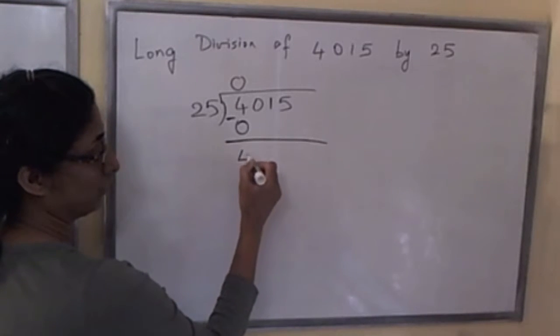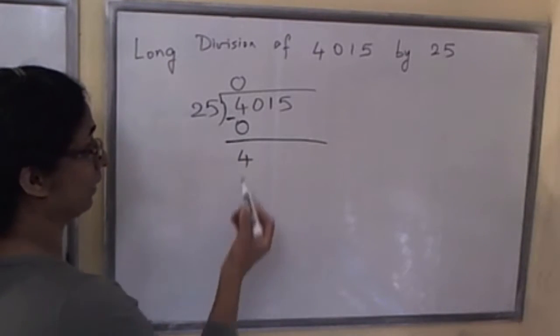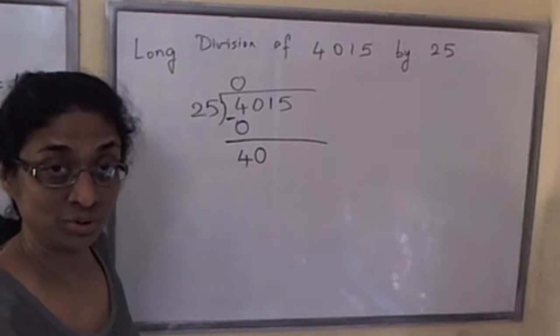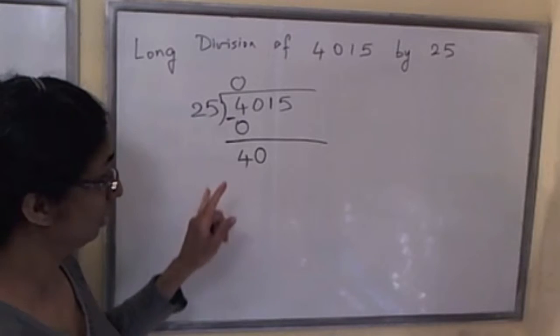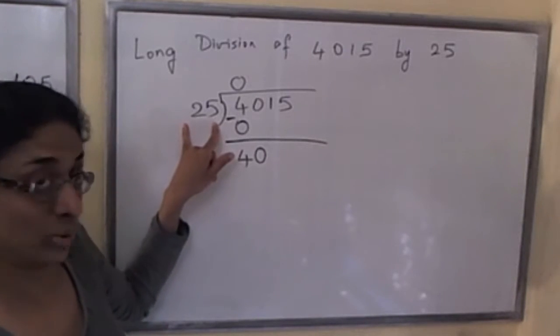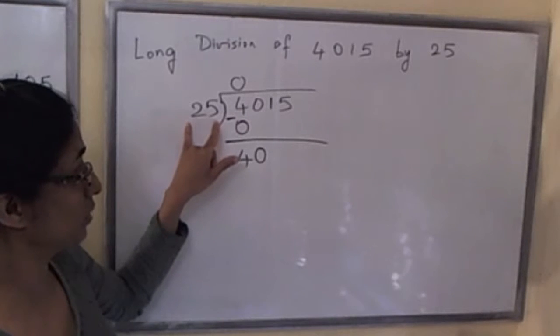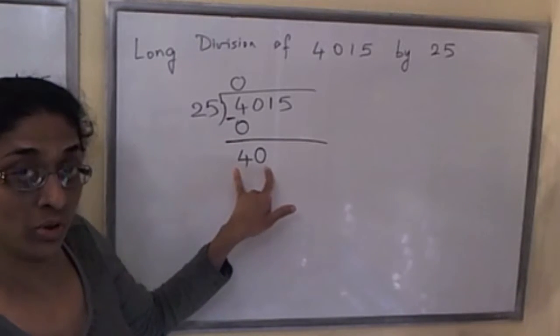Next step, we bring down the next digit, 0. Now we do division with remainder of 40 by 25. That means we ask ourselves: what is the maximum copies of 25 in 40? That would be 1.